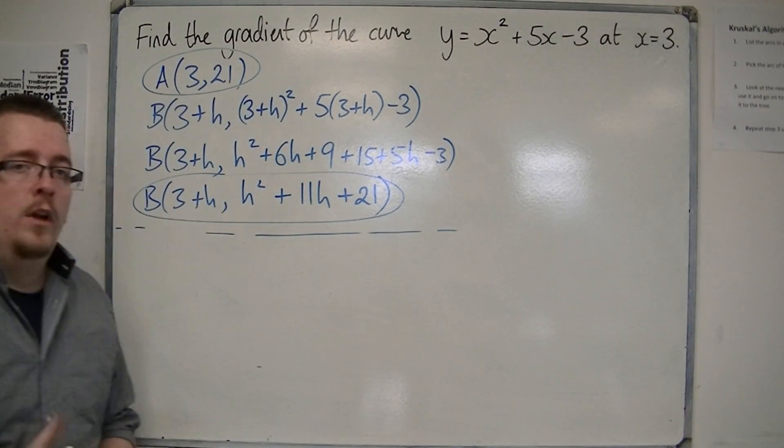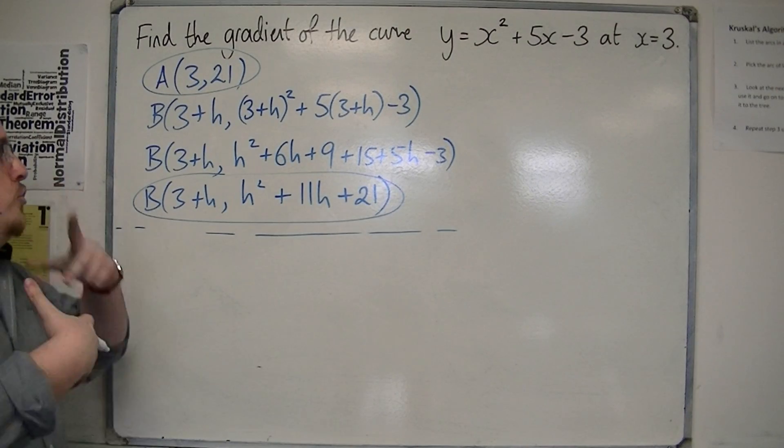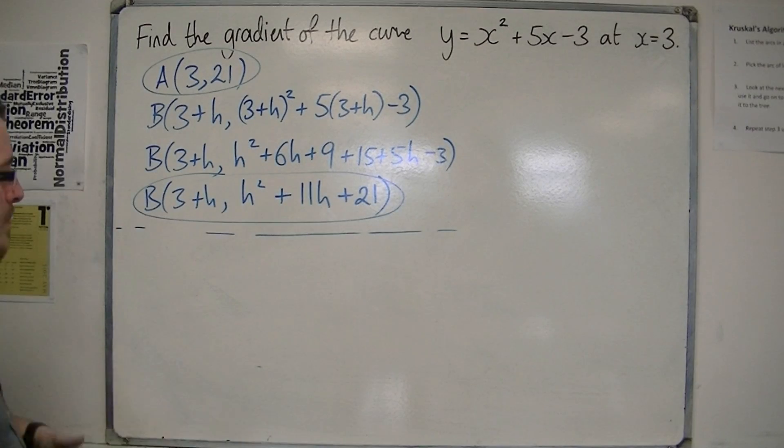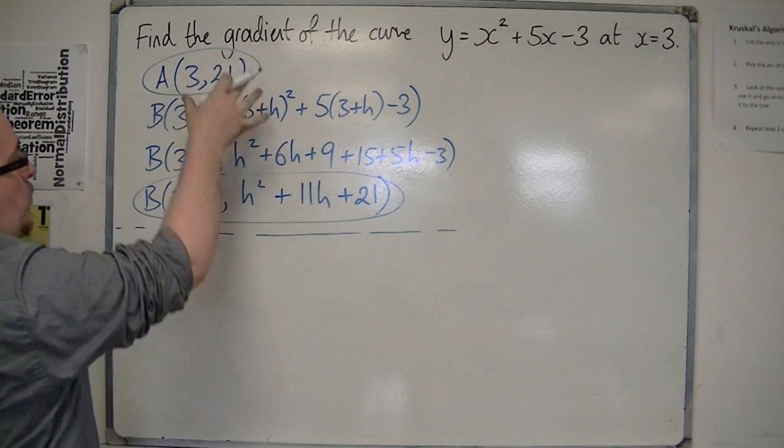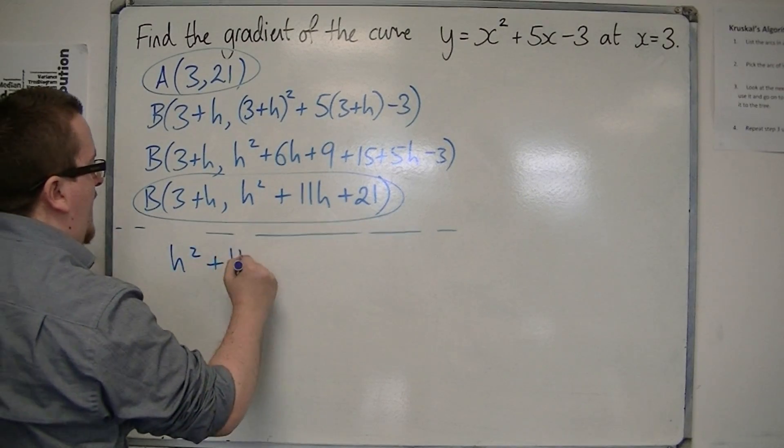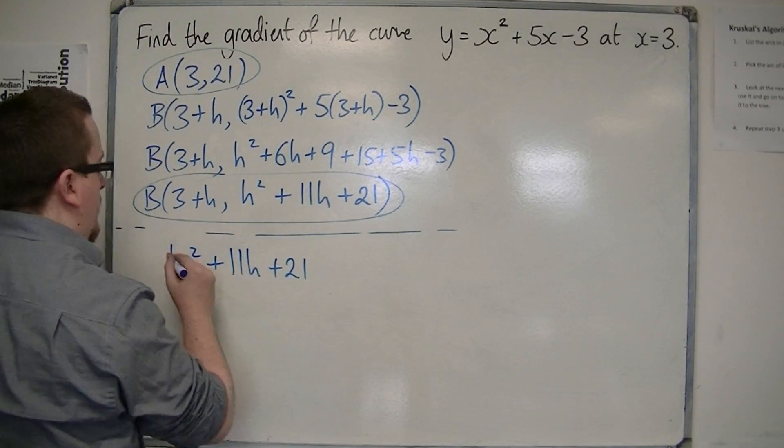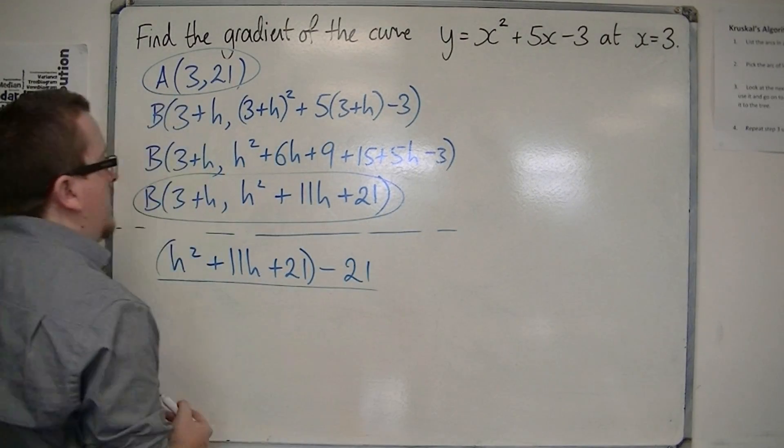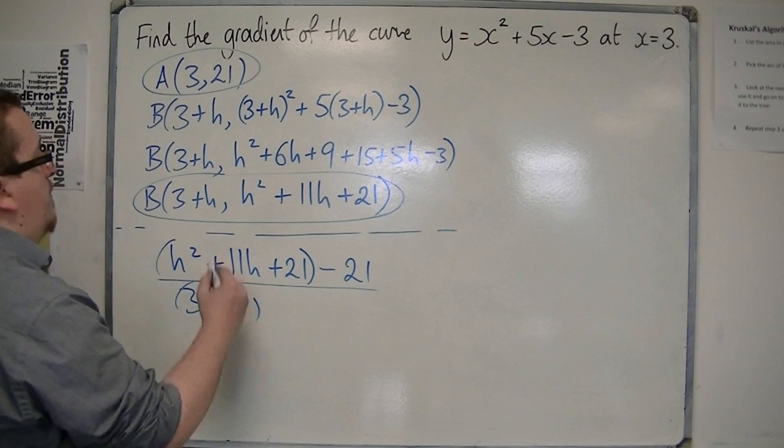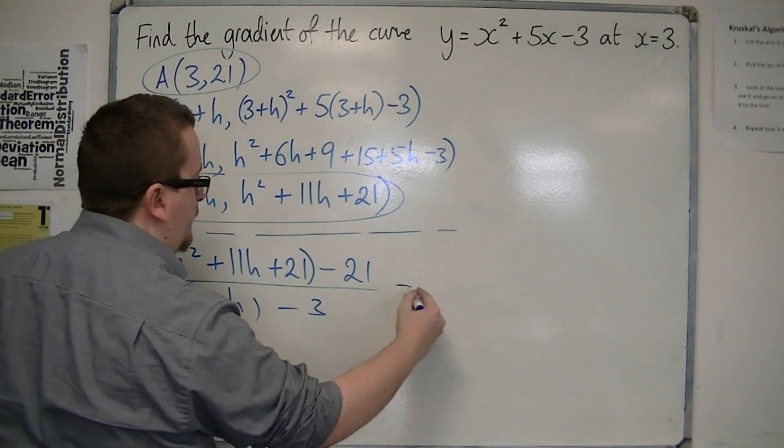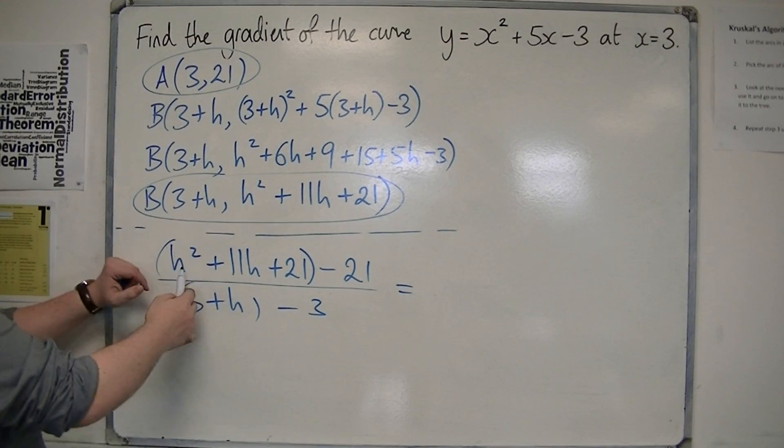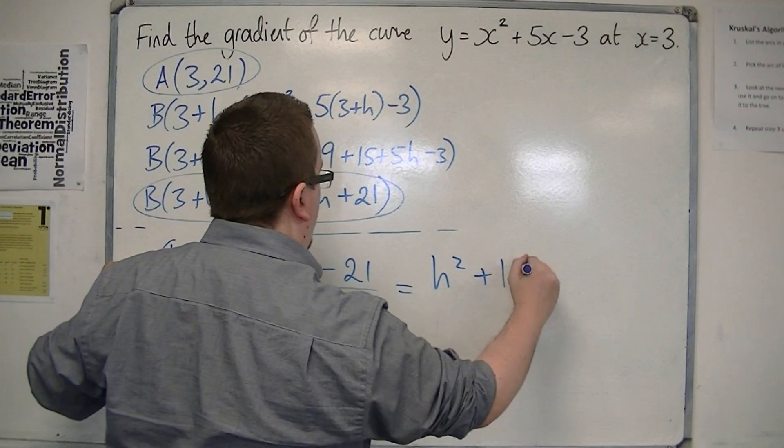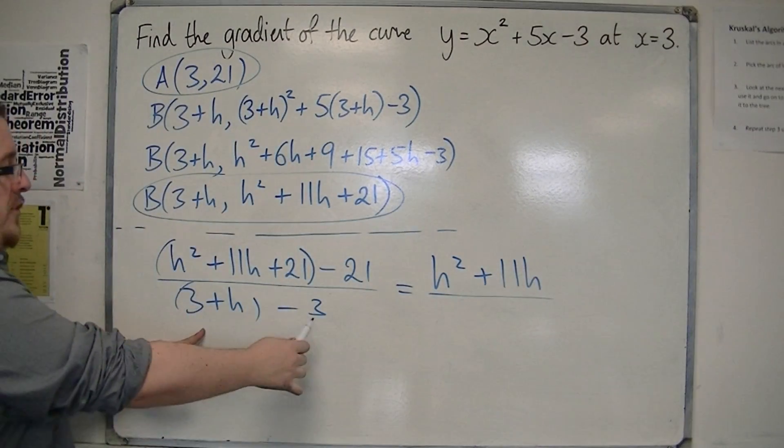Now step 2 will be to determine the gradient of the chord A, B. So the gradient of the chord A, B will be the difference in the y-coordinates. So h squared plus 11h plus 21, take away 21, over the difference in the x-coordinates. So that's 3 plus h, take away 3. So we've got h squared plus 11h plus 21, take away 21 is h squared plus 11h. And on the bottom, we've just got h.